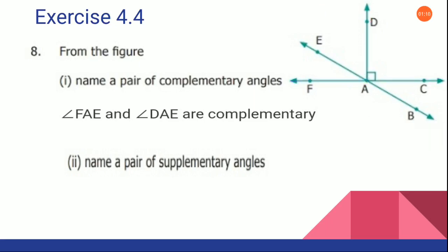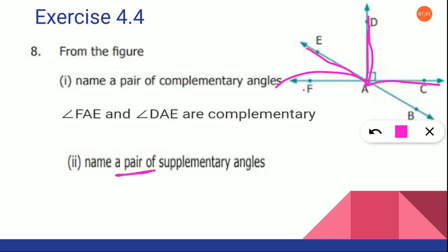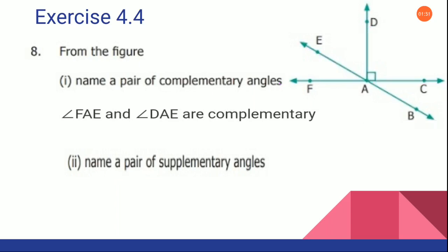And is there any other way to name it? Since it is given as a pair, you are going to take these two. Suppose the word pair is not given, then you can write it as angle EAF plus angle EAD plus angle DAC will give you 180 degrees.